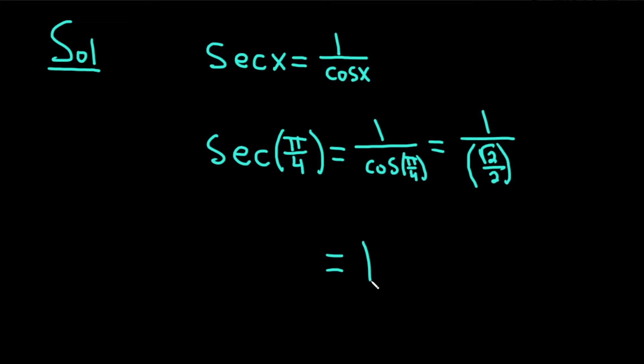So that's the same as 1 times the reciprocal of the square root of 2 over 2. So this is 2 over root 2. So you get 2 over root 2 as the answer.